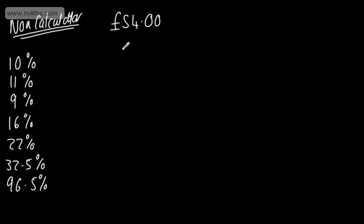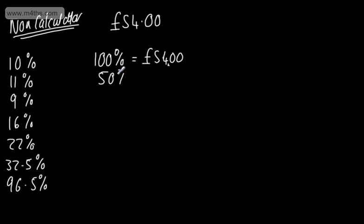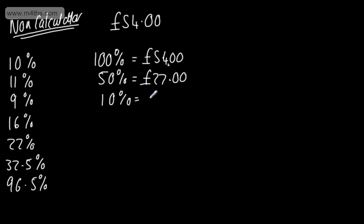I'm going to take my £54 — that is all of the money I've got, so 100% equals £54. From here, we're going to build up some values. If I halve this, that gives me 50%, so halving £54 gives me £27. For 10%, all I need to do is divide the quantity by 10: £54 ÷ 10 = £5.40.